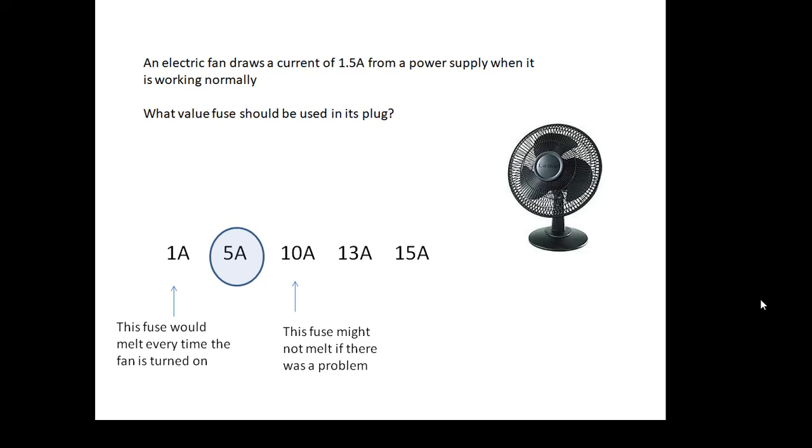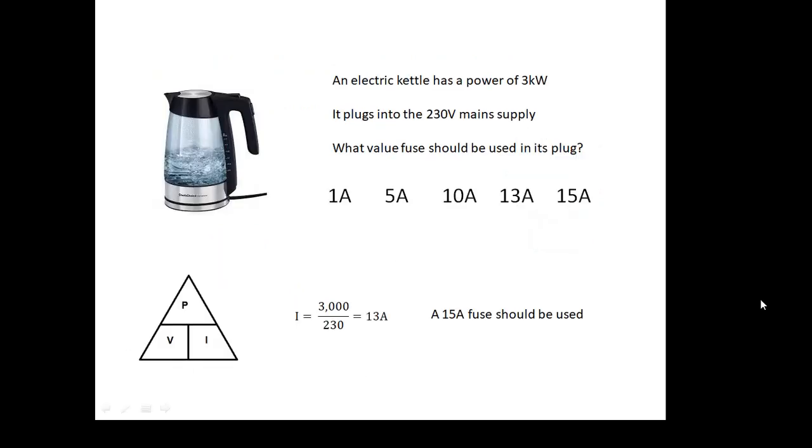And we'd use the P = V × I equation to work that out. An electric kettle has a power of 3 kilowatts. It's plugged into the 230 volt mains supply. What value fuse should be used in its plug? So what we're going to do now is work out the current. Using the equation, the current is the power divided by the voltage, and so the current that the kettle would normally use is 13 amps. So we should use a 15 amp fuse in the kettle.